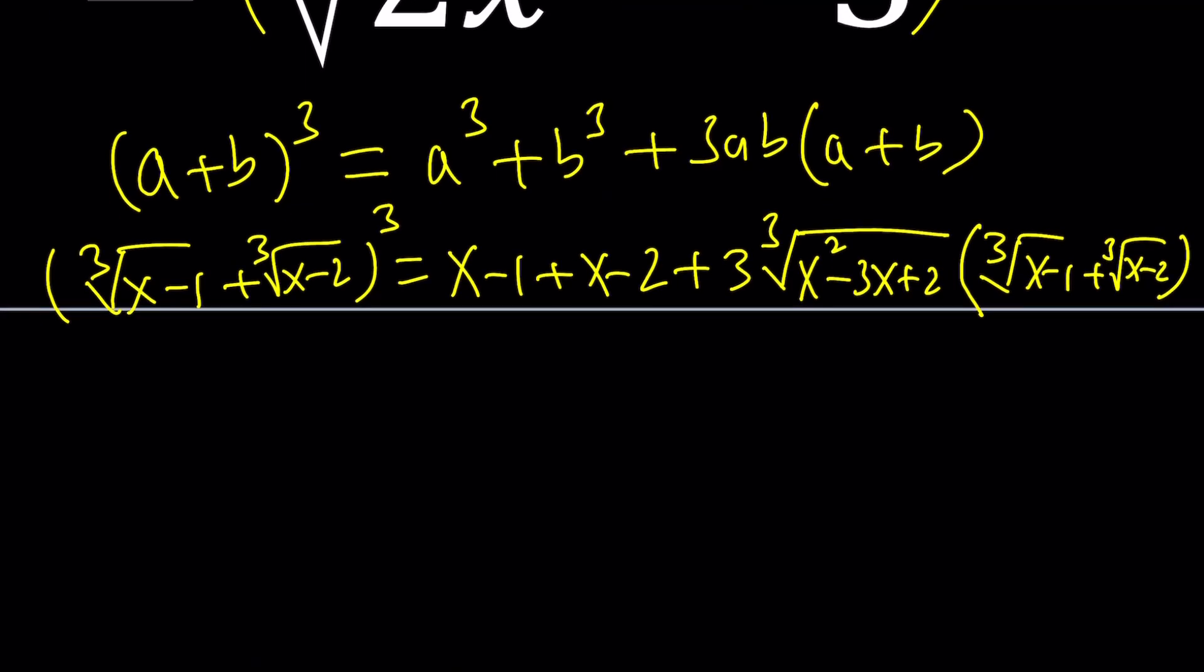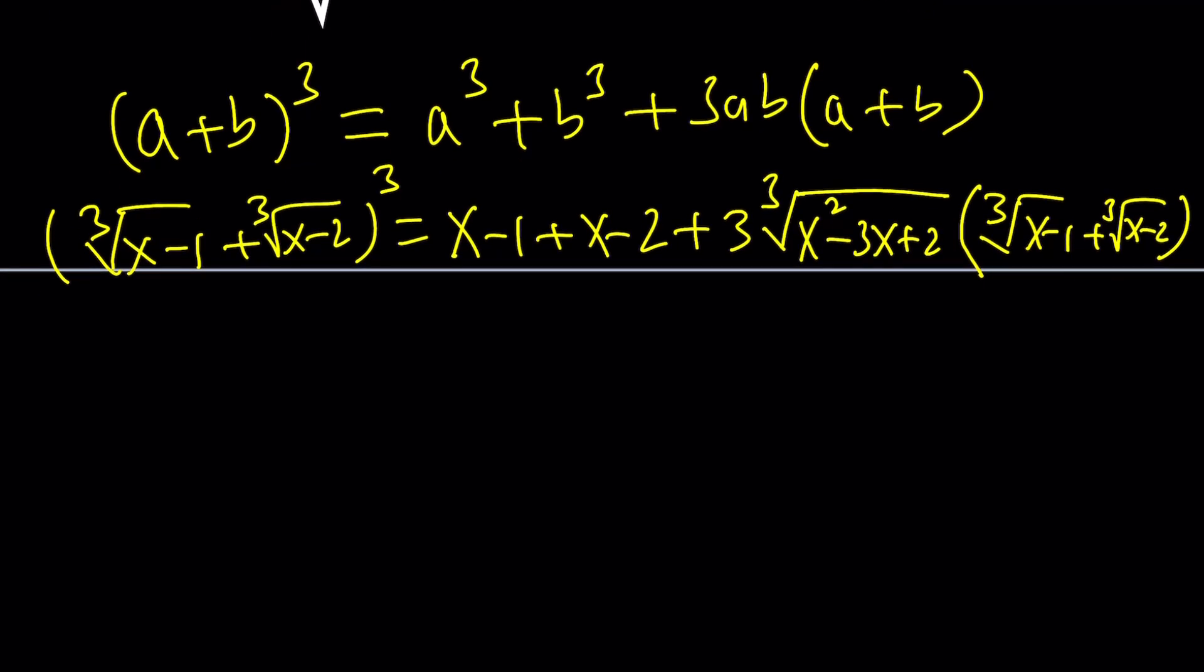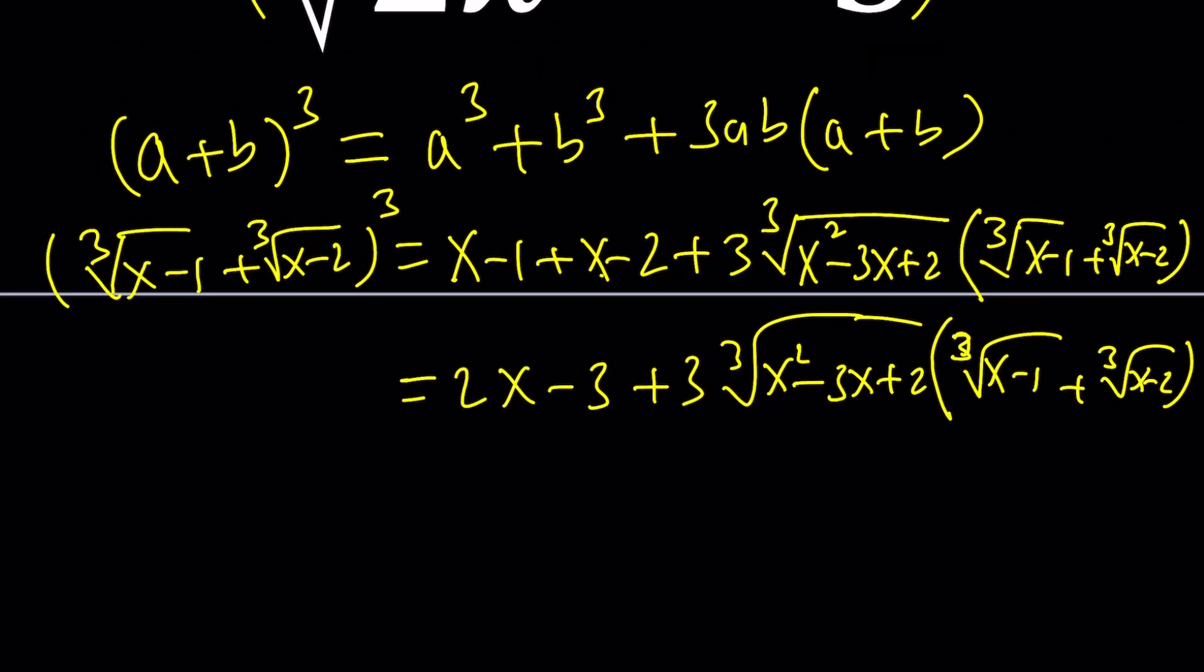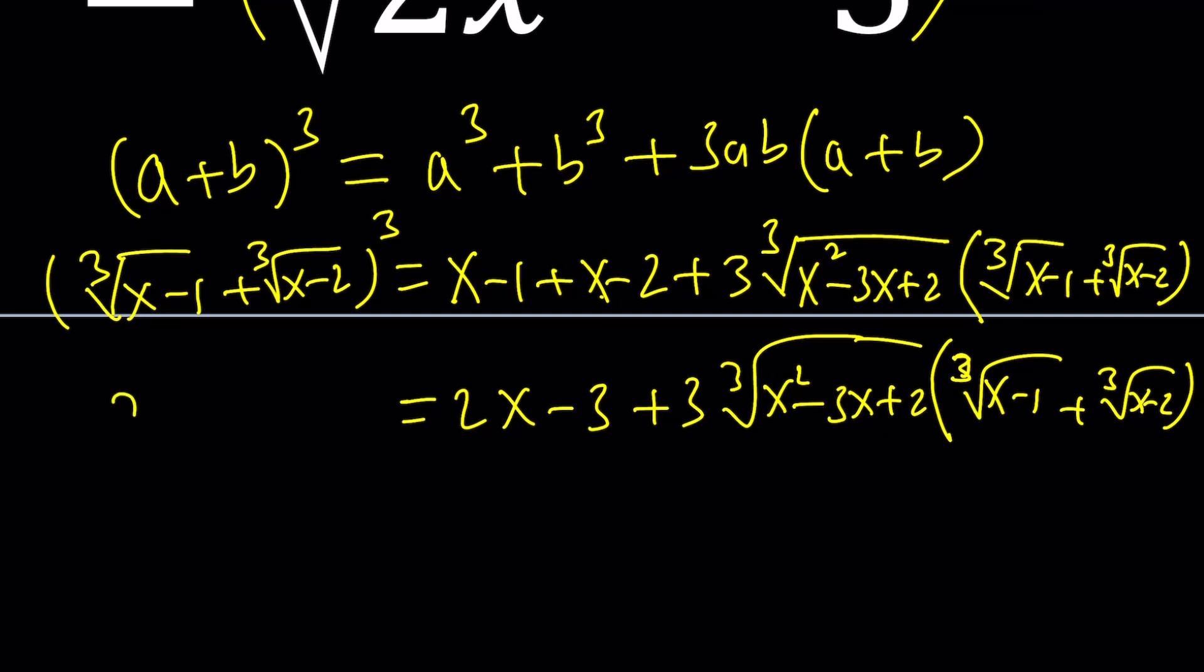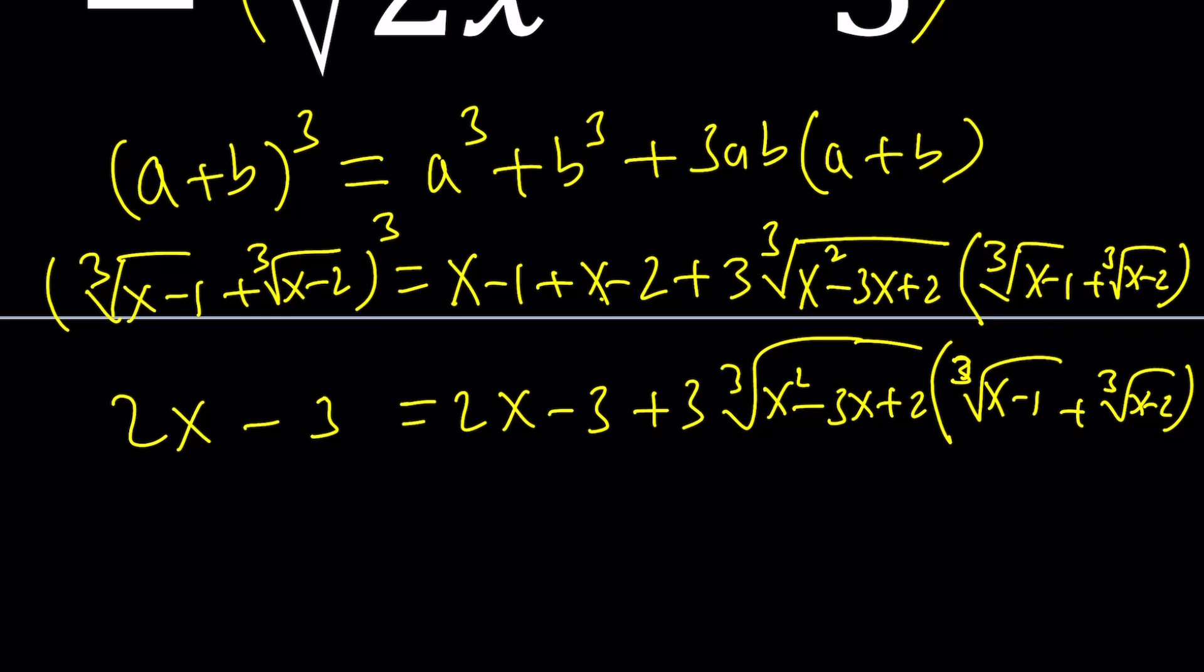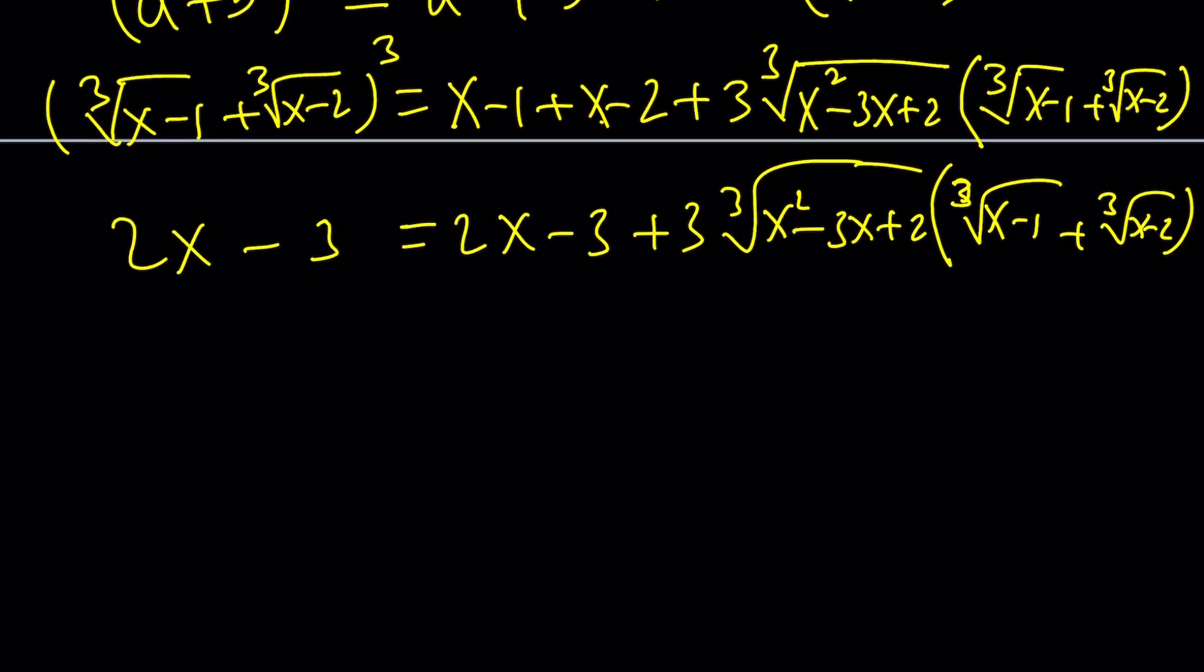All right, great. So now we have x plus x, which is 2x, and then minus 3 plus 3 times the cube root of x squared minus 3x plus 2 multiplied by the cube root of x minus 1 plus the cube root of x minus 2, which was the original expression on the left-hand side. And of course, this is equal to the cube of that. Let's put that on the left-hand side as 2x minus 3. Make sense? I switched sides because I don't have room on the right-hand side.